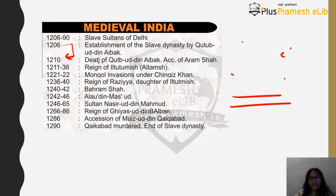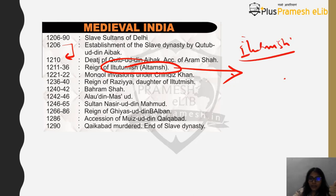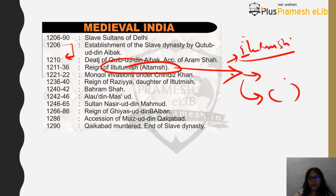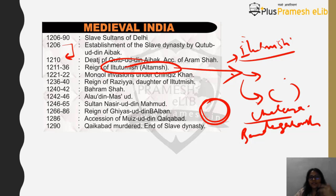After Qutbuddin Aibak, who ruled for only four years, came Iltutmish as the second ruler. Iltutmish was a very able ruler — he was able to keep the Mongol invasions at bay without going to war with them under Changez Khan. He started the Chalisa, a council of 40 slaves or people to keep an eye on administration. Iltutmish ruled after Qutbuddin Aibak for almost 25 years, from 1211 to 1236 AD, and was able to save the empire from the dreadful Mongol invasions.